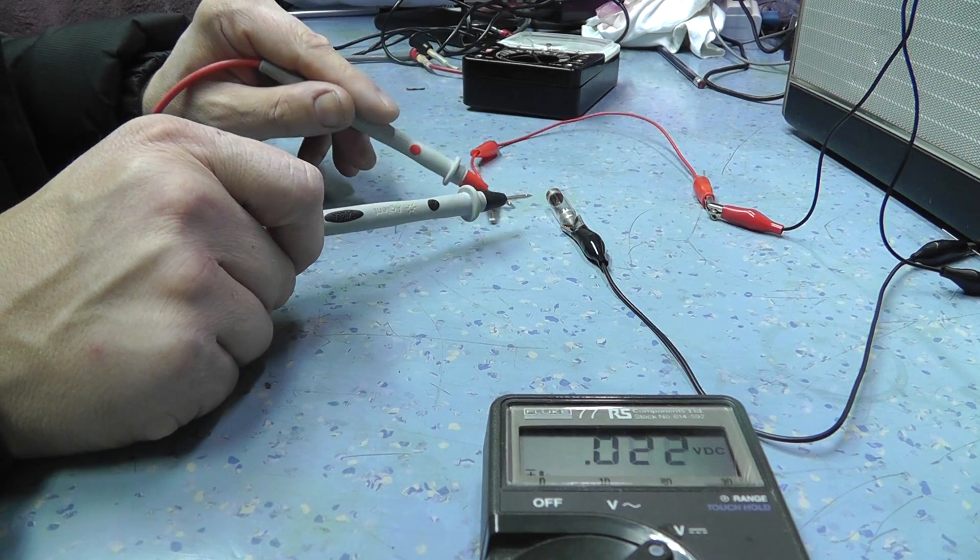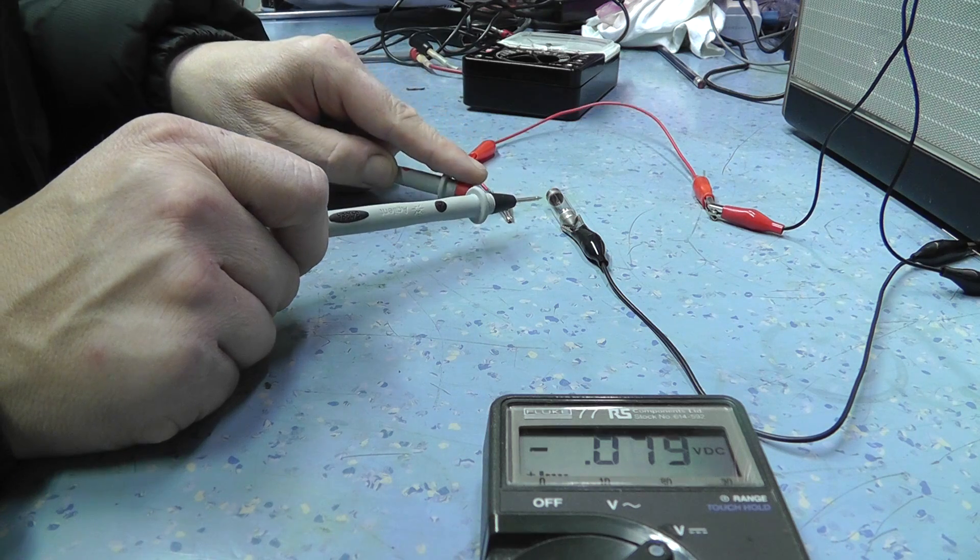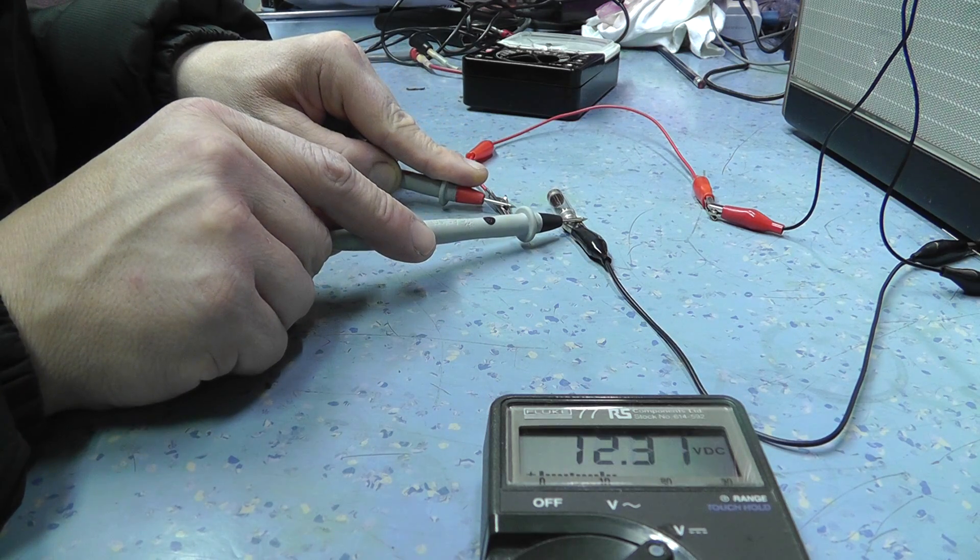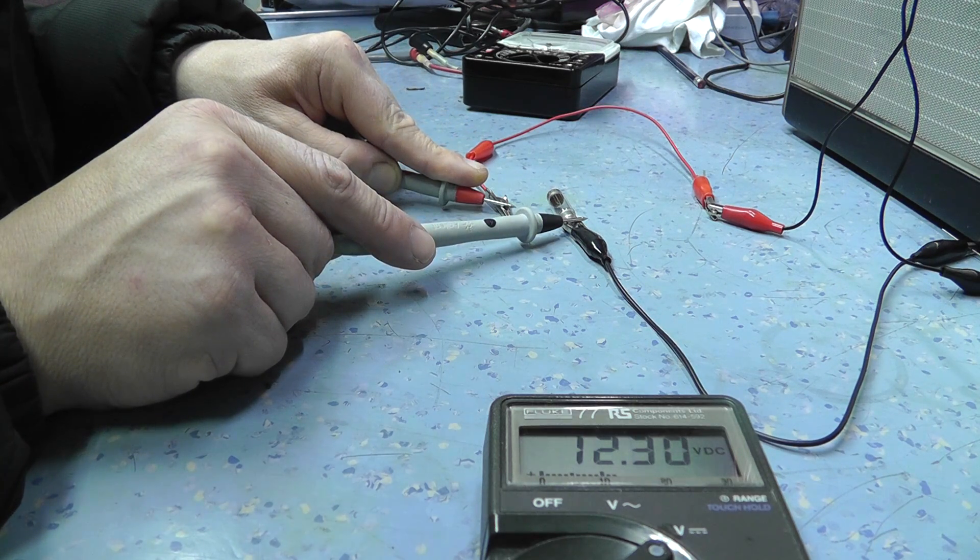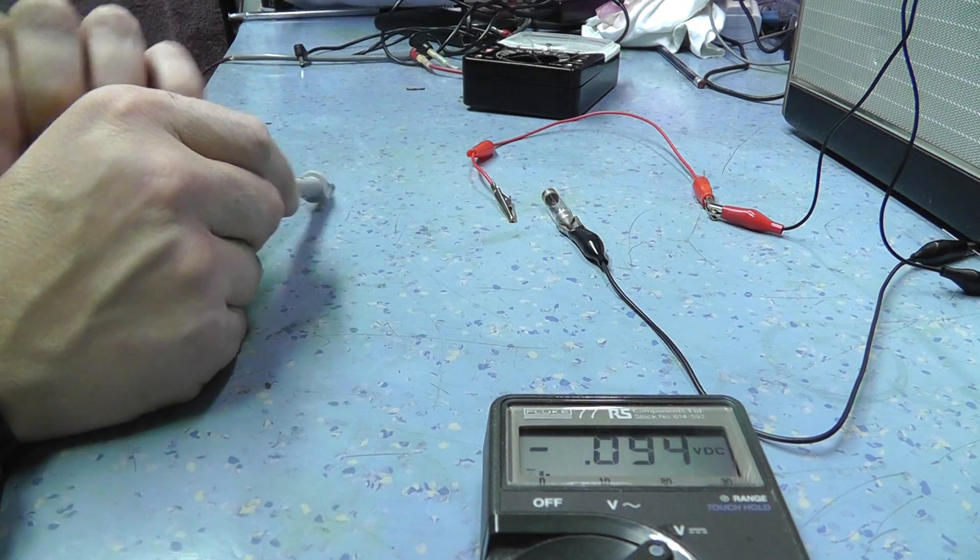And if you see, if I connect up to the meter, you see the Fluke reading 12.4 volts, 12.29, 12.3 volts. Okay, so we've got our 12 volts there.